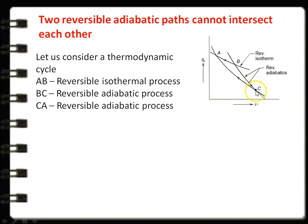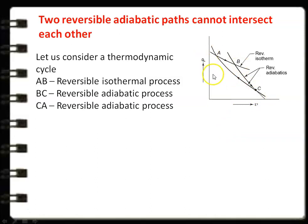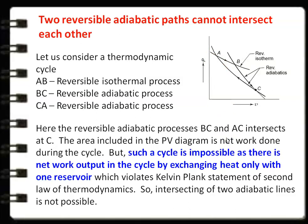In this cycle, lines B-C and C-A intersect at point C, meaning the reversible adiabatic lines are intersecting. Now consider the conditions: A-B is an isothermal process; B-C and C-A are reversible adiabatic processes. For reversible adiabatic processes, there is no heat transfer. So for B-C and C-A there is no heat transfer — heat transfer occurs only in process A-B.